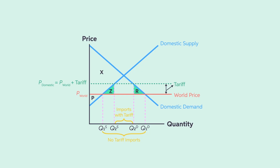Now let's look at the welfare effects on the coffee market if there is a tariff and compare it with the no-tariff outcome. A tariff on a good raises the price above the world price. Here, the domestic price of coffee, Pd, will rise to the world price Pw plus tariff.